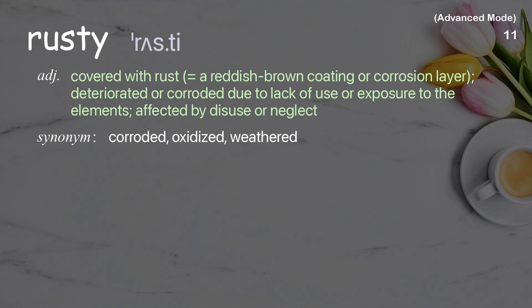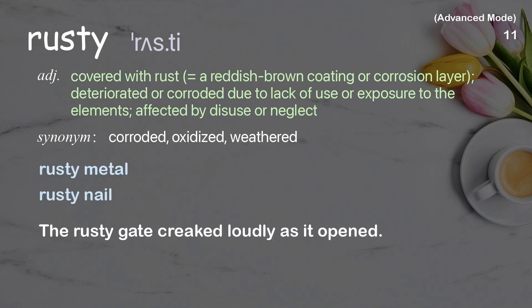Rusty: covered with rust — a reddish-brown coating or corrosion layer; deteriorated or corroded due to lack of use or exposure to the elements; affected by disuse or neglect. Examples: rusty metal, rusty nail. The rusty gate creaked loudly as it opened.